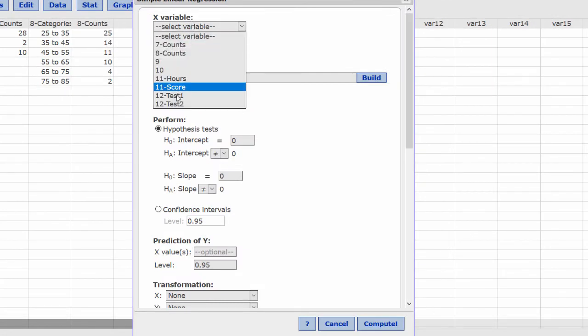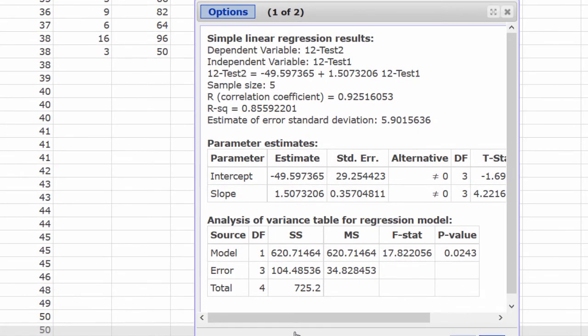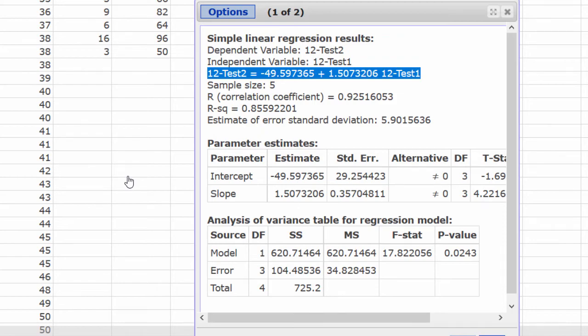For the x variable, select the test one scores. For the y variable, test two scores. And press Compute. And our equation is in the third row under simple linear regression results.